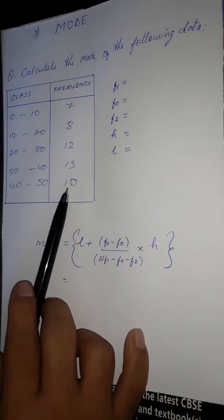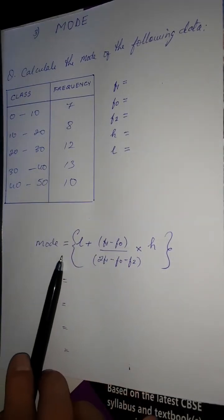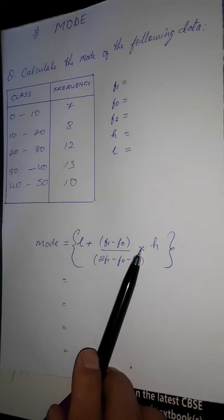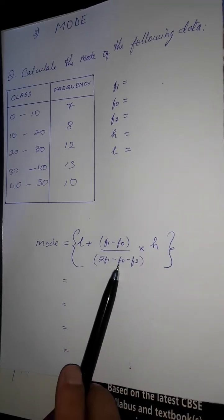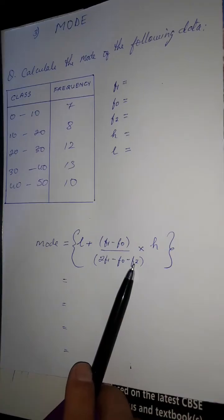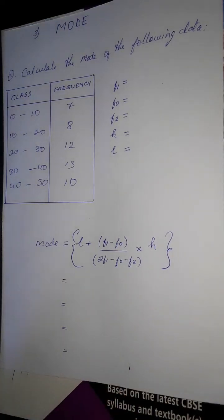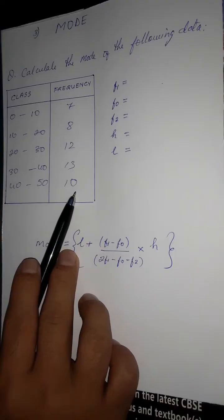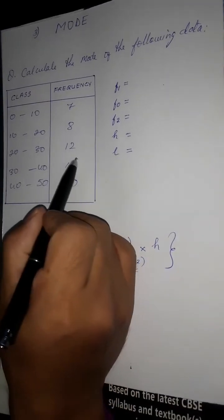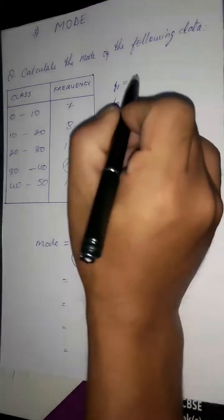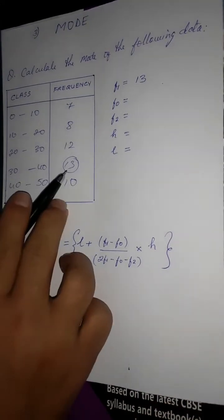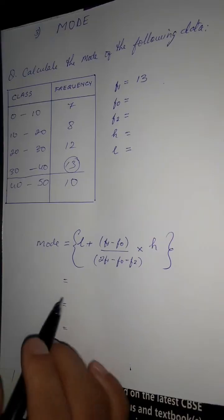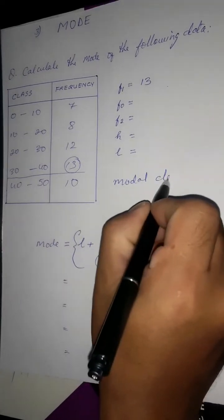Calculate the mode of the following data — class interval and frequency. This is the formula: Mode equals L plus (F1 minus F0) into H, divided by (2F1 minus F0 minus F2). Here F1 is the frequency of the modal class, F0 is the preceding frequency, and F2 is the succeeding frequency.